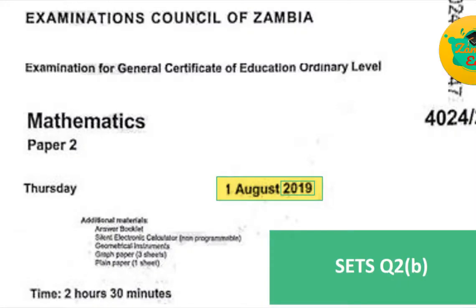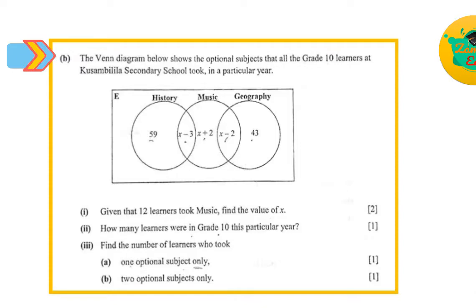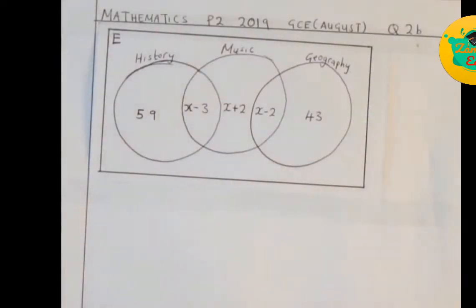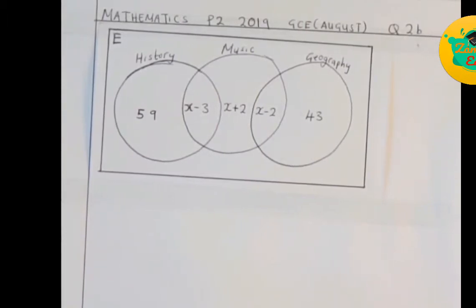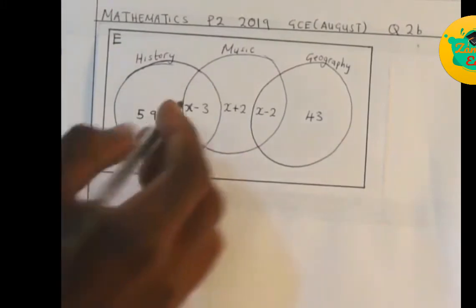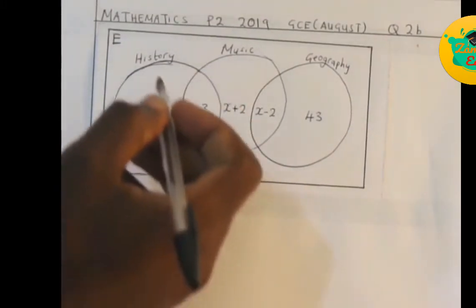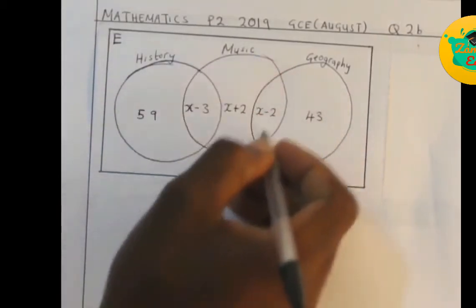We are looking at the 2019 GCE sets question 2b. The Venn diagram below shows the optional subjects that all the Grade 10 learners at Kusambi Lila Secondary School took in a particular year. The Venn diagram shows optional subjects for all Grade 10s, where one set represents History, another represents Music, and the last set represents Geography.